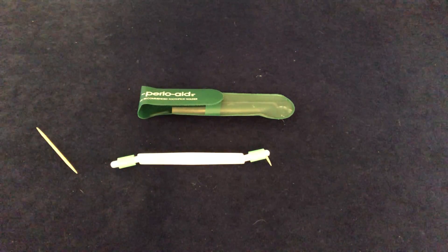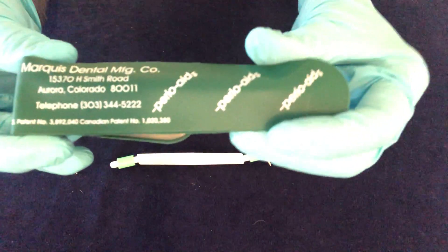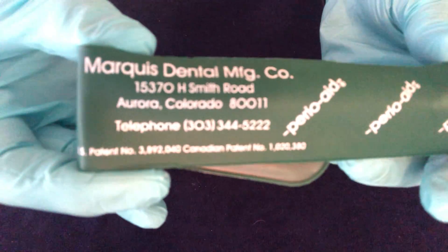The PerioAid is a toothpick holder that is distributed by the Marquis Dental Manufacturing Company. Here's the address and phone number.